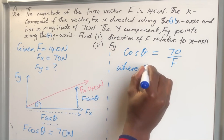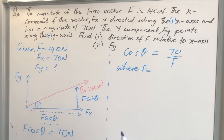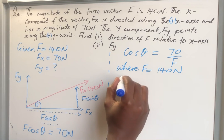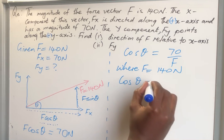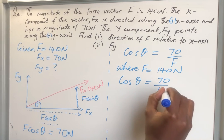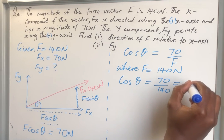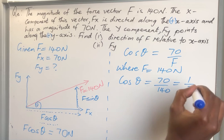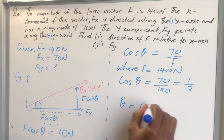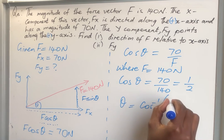Where F is equal to 140 newtons, so I'll have cos theta is equal to 70 divided by 140, which is equal to half. So my theta now is going to be equal to cos inverse of half.